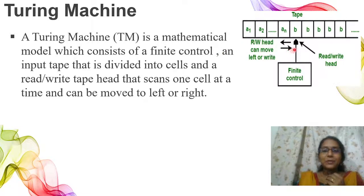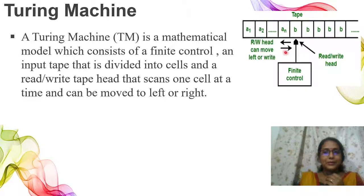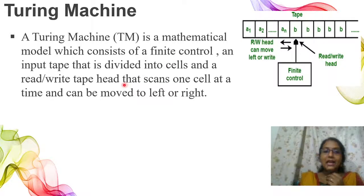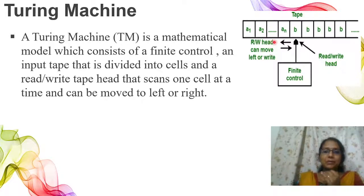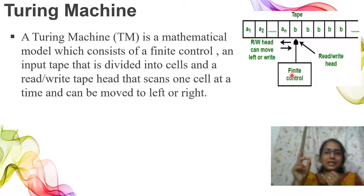There is a read or write tape head. This is the major difference — it is a read or write head, not just a read head. This read or write tape head scans one cell at a time, and it can be moved to the left or right. Double-sided movement is possible. So the Turing Machine consists of three major parts: finite control, input tape divided into cells, and a read or write head that can move either left or right.